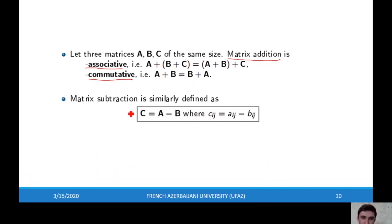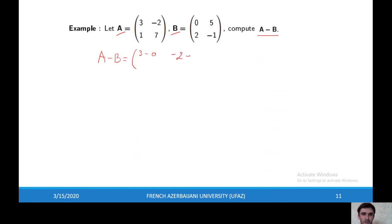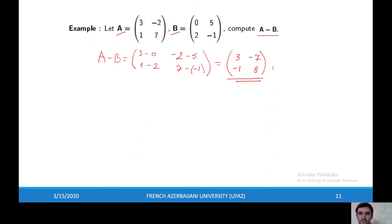In a similar way we can define the subtraction of matrices, where the elements of the result are the differences of corresponding elements of A and B. For example, A minus B gives: 3-0, -2-5, 1-2, 7-(-1), which equals 3, -7, -1, and 8. That's the subtraction.